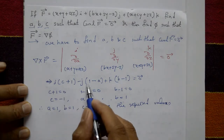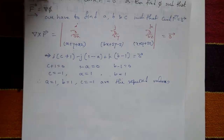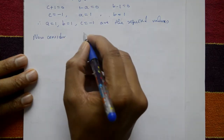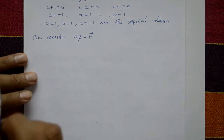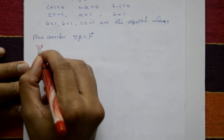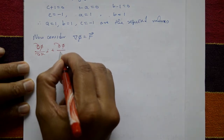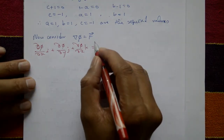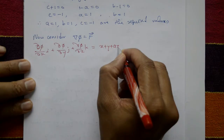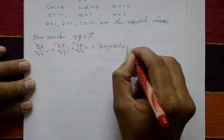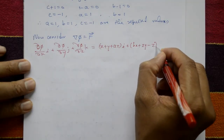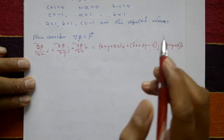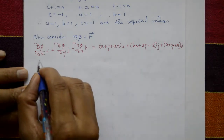Putting the a, b, c values in confirms curl F equals zero. Now consider del phi equals F, where the gradient is (∂φ/∂x)i + (∂φ/∂y)j + (∂φ/∂z)k equal to F. With a = 1, b = 1, c = -1, F becomes (x + y + z)i + (x + 2y - z)j + (x - y + 2z)k.